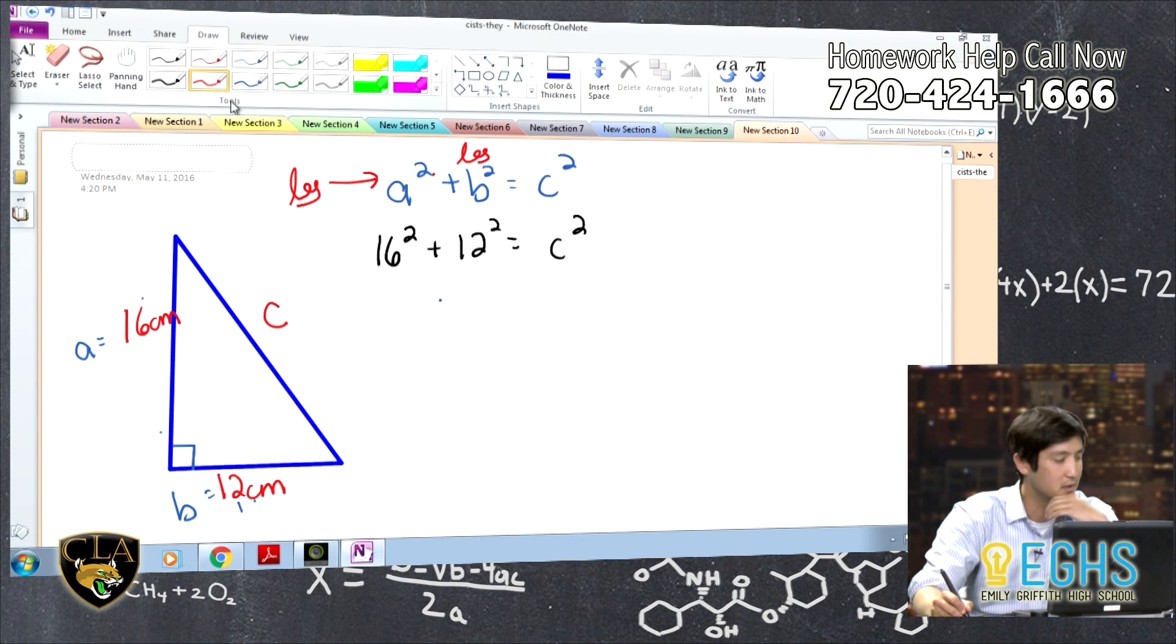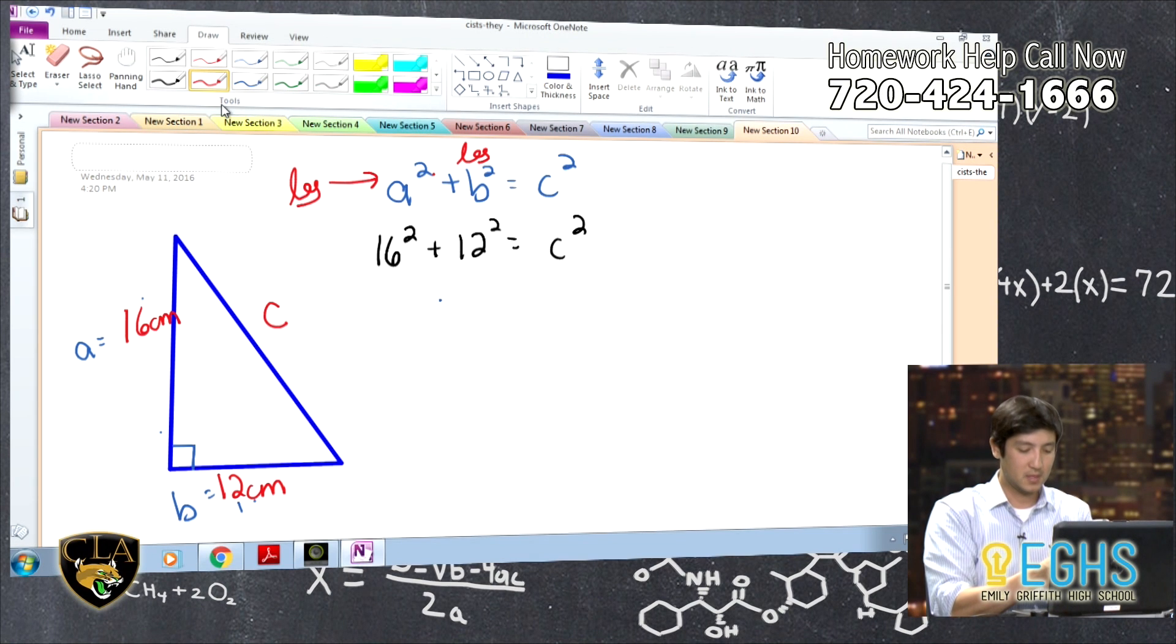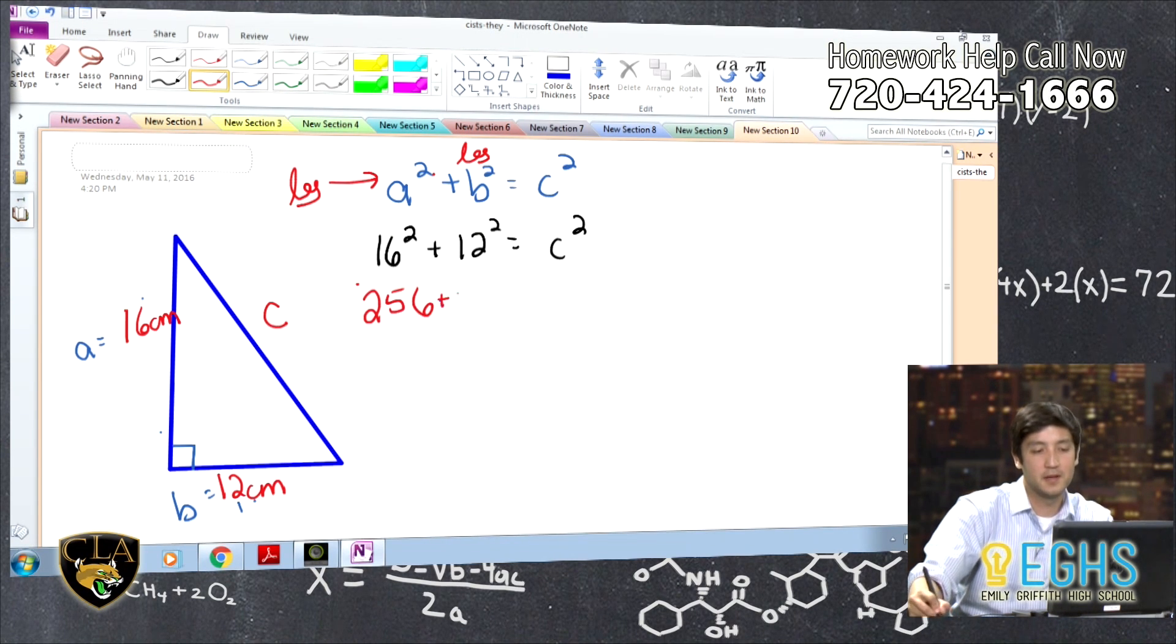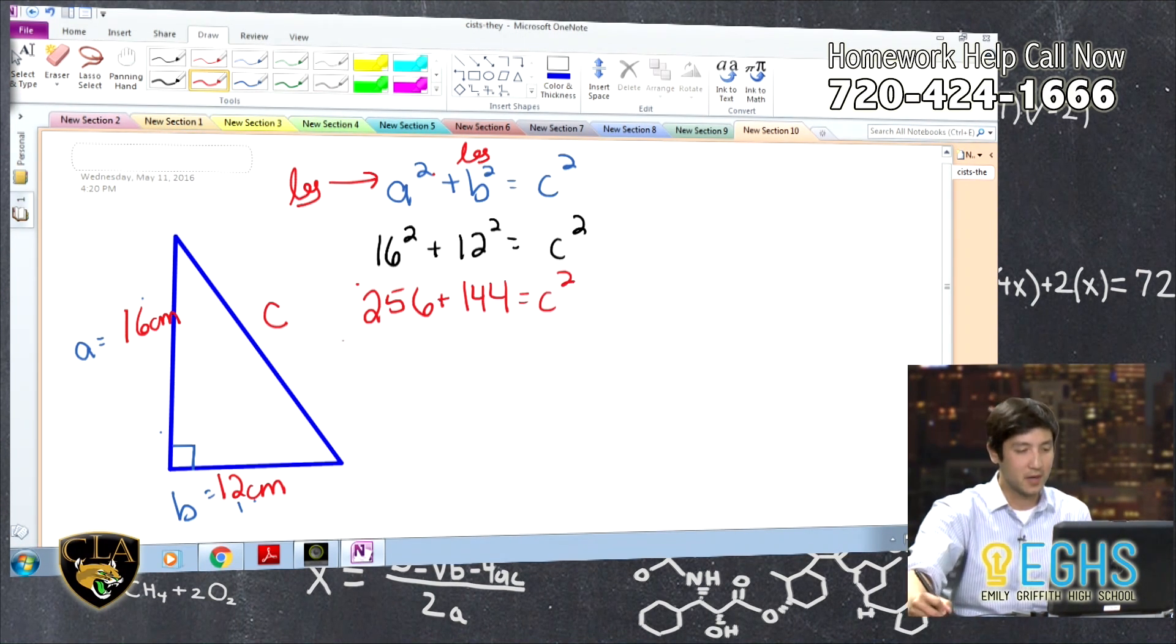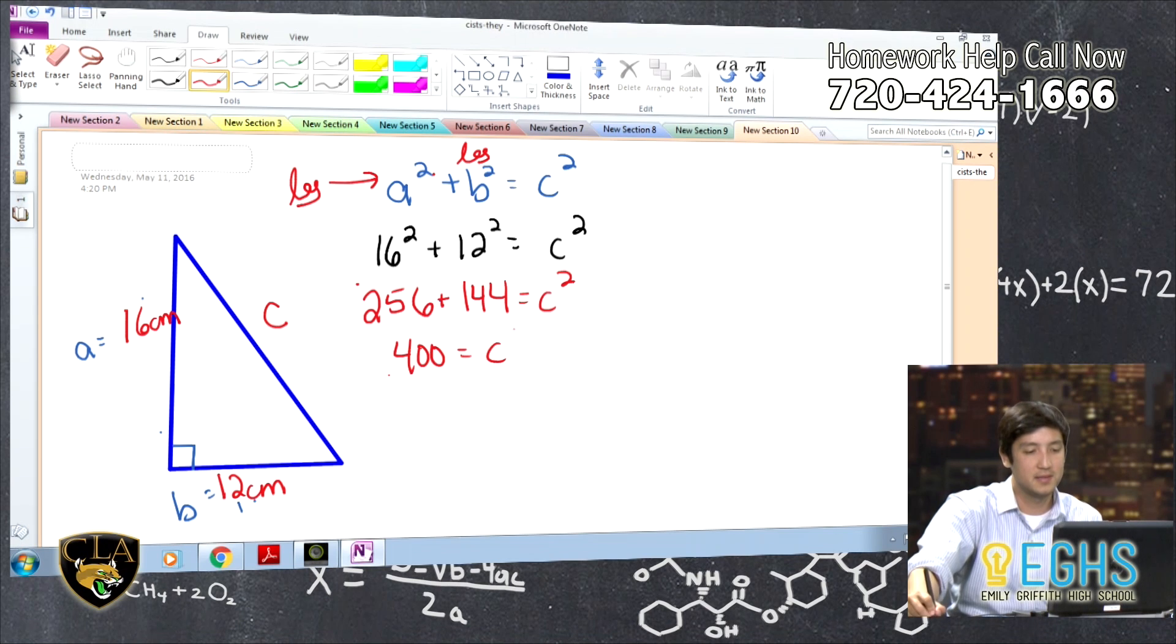16 squared is, I can't think of it right now. 16 squared. I can't think of it either. I think it's 256. Yeah, that sounds right. Yeah, 256. Nice. Yeah. So 16 squared is 256 plus 12 squared, which is 144. That is going to equal C squared. And we're going to continue simplifying. Nice numbers. Yeah, 256 plus 144 is 400 equals C squared.